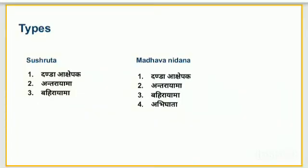The types of Aakshapaka according to Shushruta are: Dhanda Aakshapaka, Antarayama, and Bahirayama. According to Madhavanitana, there are mainly four types: Dhanda Aakshapaka, Antarayama, Bahirayama, and Abhigata.